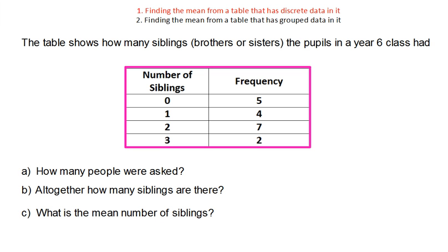So the first part, part A, says how many people were asked? Okay, so we know it's a year six class. We need to look at how many. So we've got five kids here, plus four, that makes nine, plus seven, that makes 16, and plus two makes 18. So you can write 18 pupils were asked.